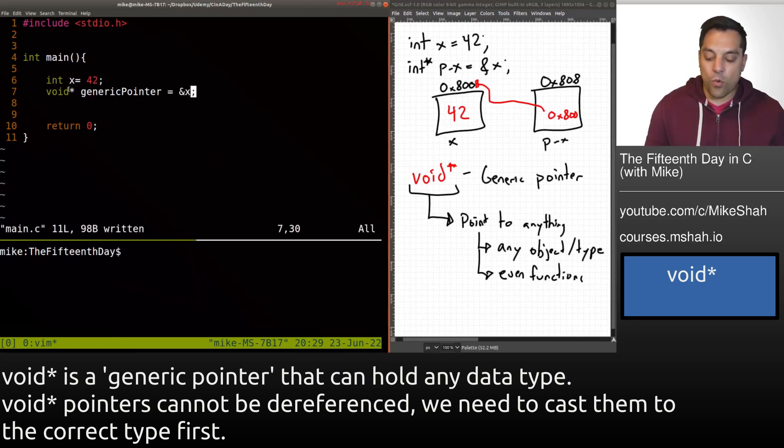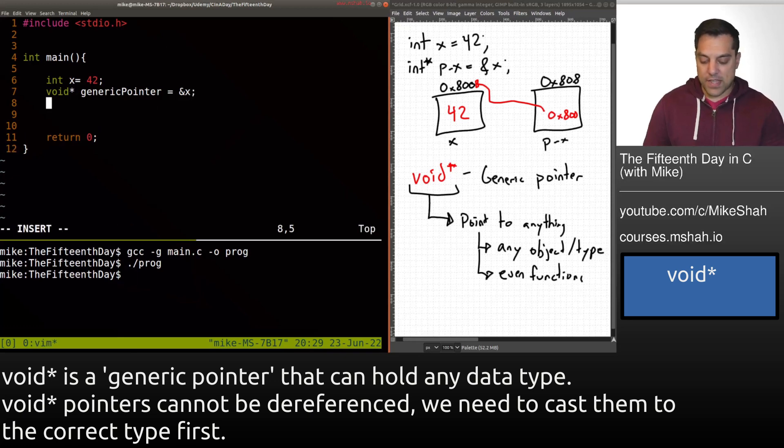And I'll create this void star here. And I'm just going to call it the generic pointer. And it needs to point to something. So I'll have it store the address of x. Now again, because this is void, we don't have any actual type information. So let's just go ahead and see if this compiles first and foremost. I'll compile with debug symbols in case we get any errors. And I'll run our program. And it runs fine, no segmentation faults or anything.